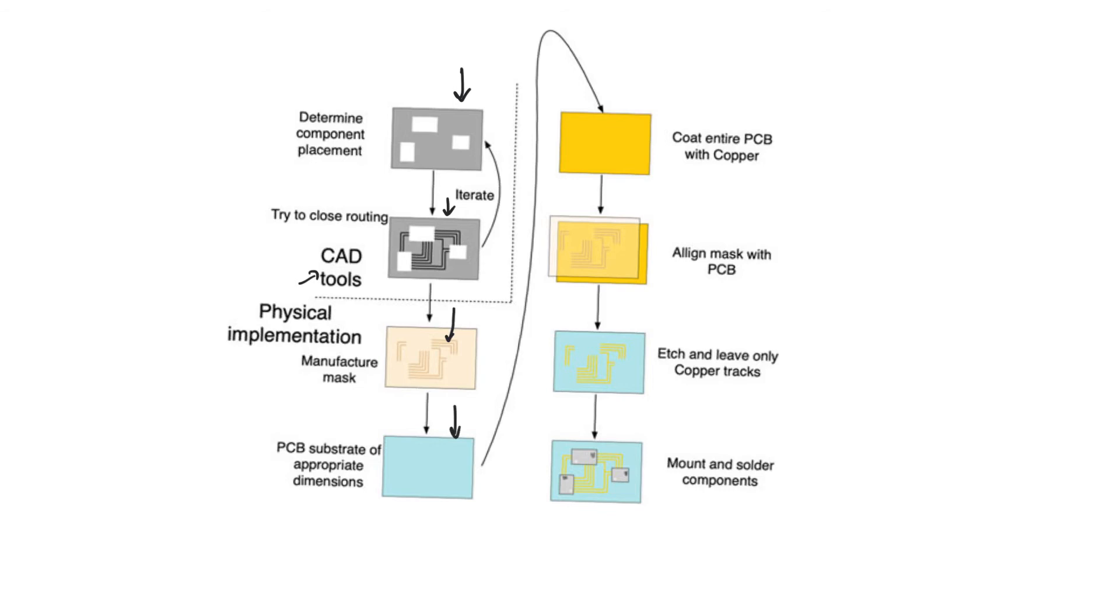Then, you have the PCB substrate, which is of an appropriate size. The mask and the substrate are going to be roughly the same size, because the features that are going to be created on the substrate are going to be one-to-one with the features on the mask. There's no real photolithography happening here. This is actual lithography. This is actual drawing on stone.